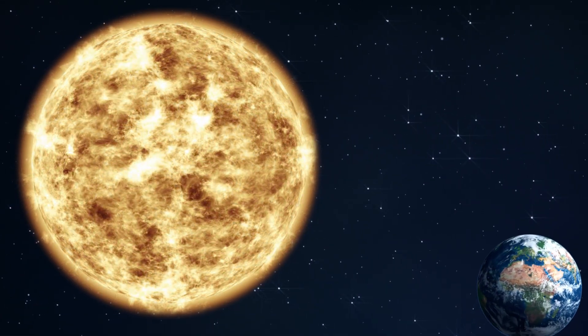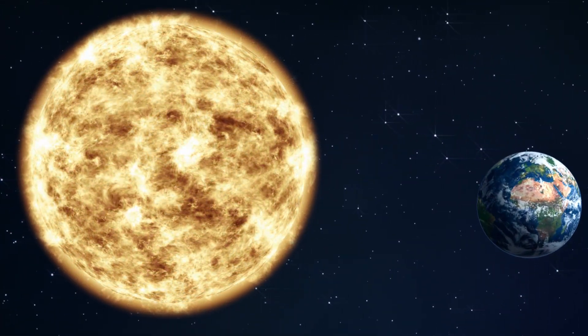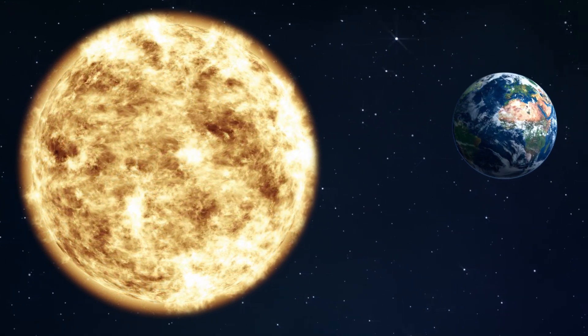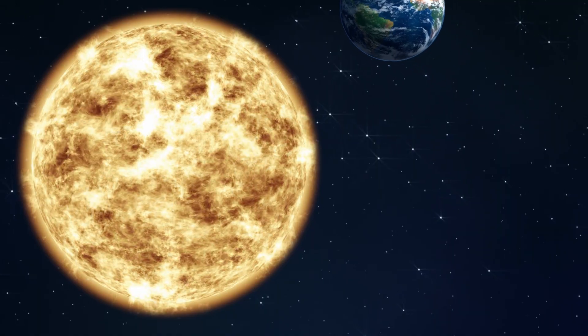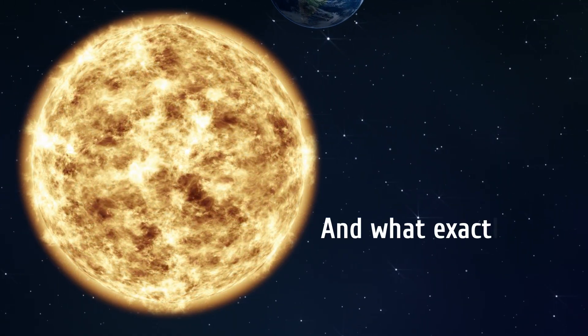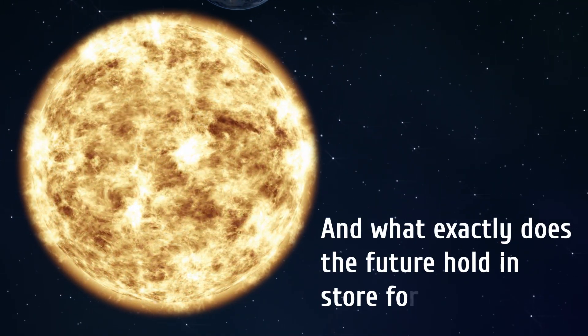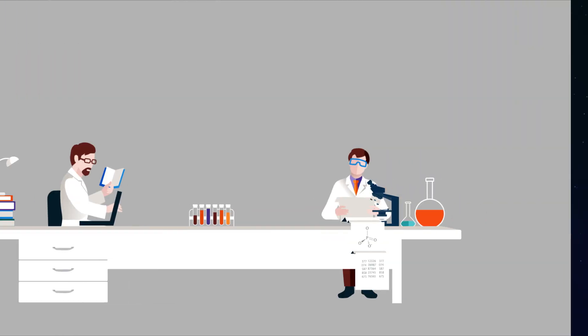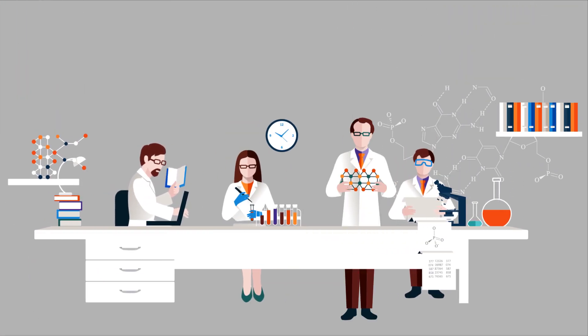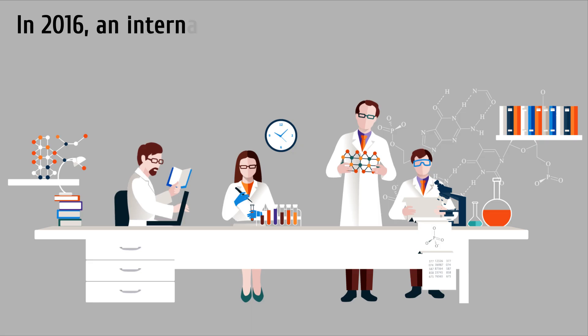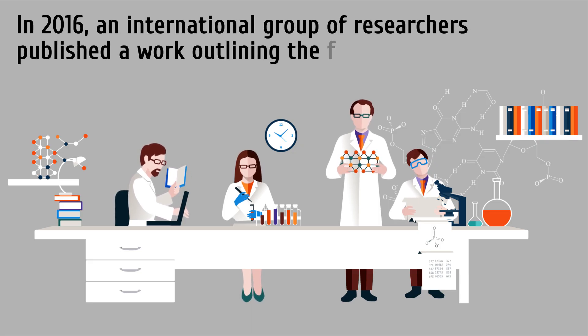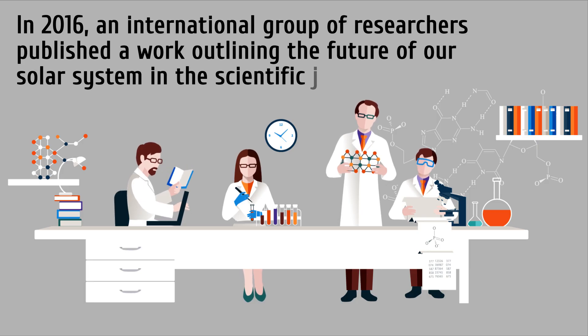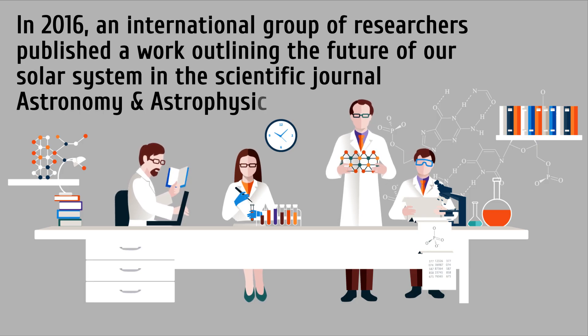Our Sun today is a middle-aged star, still powerful and blazing merrily in the sky, but moving towards the end of its life all the same. Kinda like us. And what exactly does the future hold in store for our Sun? We'll have to turn to the brightest minds to answer that question. In 2016, an international group of researchers published a work outlining the future of our solar system in the scientific journal Astronomy and Astrophysics.